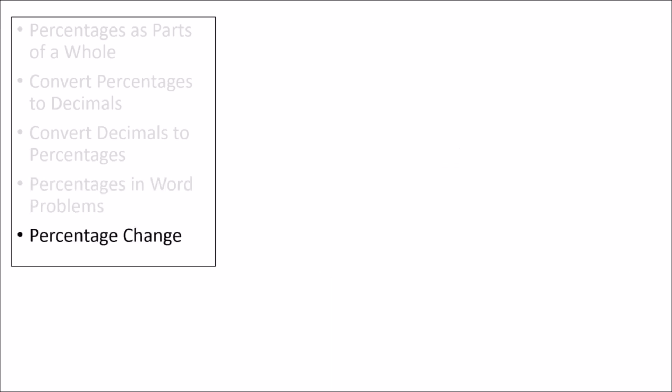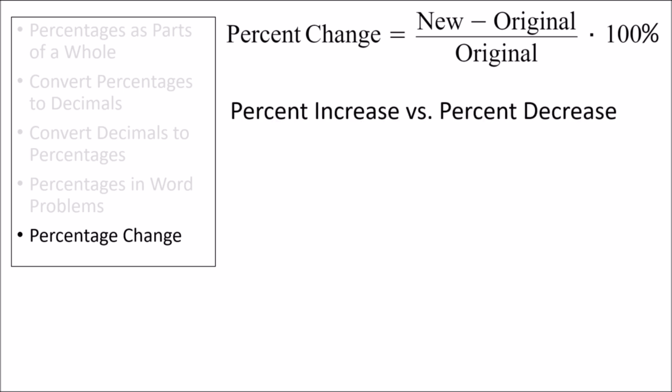Another favorite type of percentage problem is percent change. Here's the equation for percent change. We take the difference between the original and new values of something, divide by the original value, and then multiply by 100%. There are two types of percent change. We call it a percent increase if the percent change is positive, or a percent decrease if the percent change is negative.